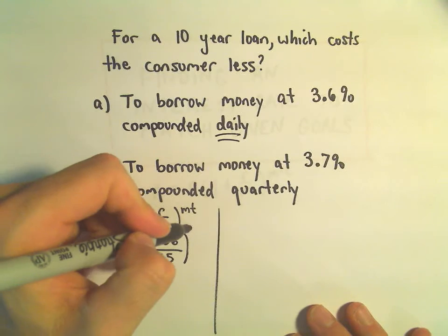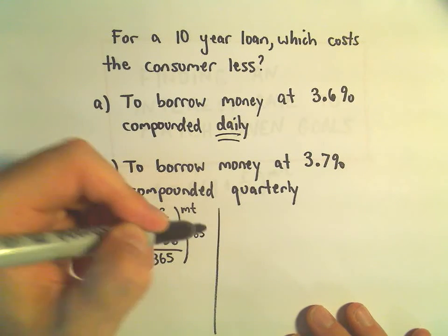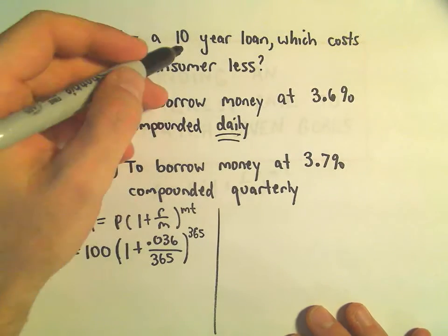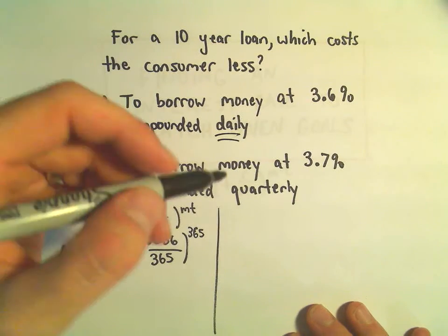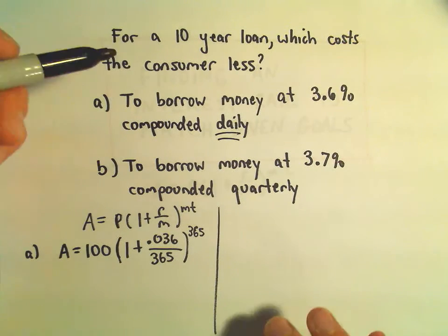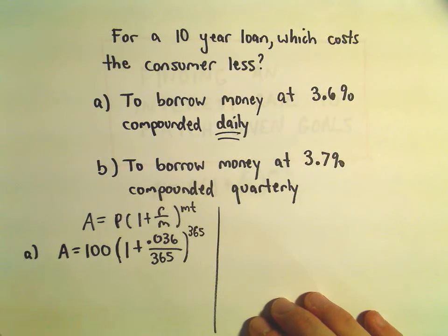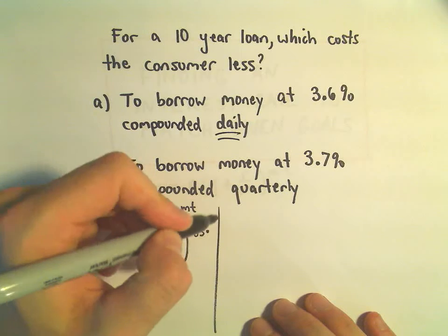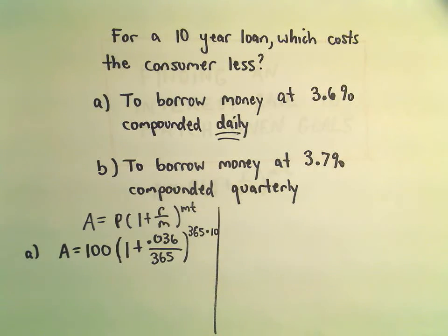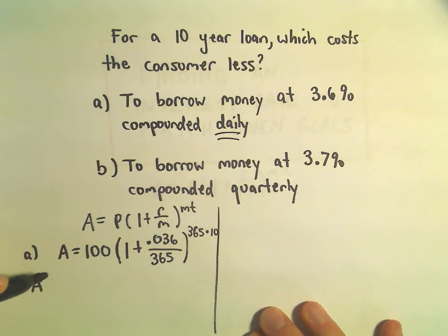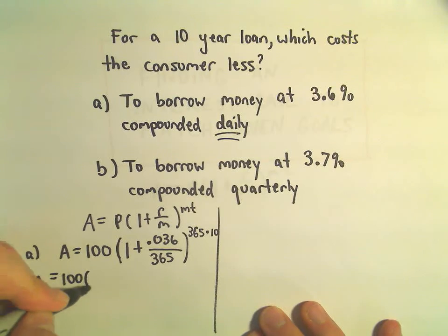And then we take 365, and they tell us 10 years. We can use 10. You could even use one year. If A is cheaper over the course of one year, for example, it would be cheaper over the course of 10 years as well. But since T is 10 years, let's go ahead and plug in 10. So let's see if we can't simplify this one down. I'm going to do a few steps here at once.